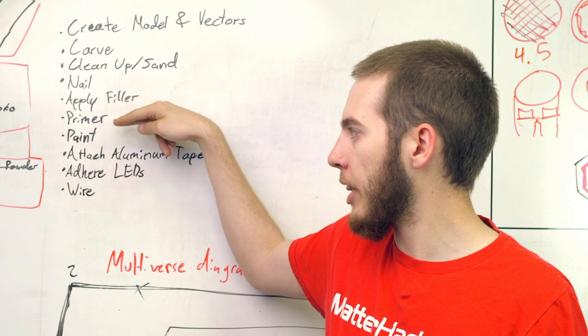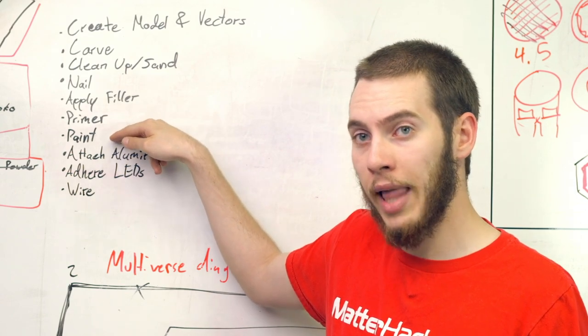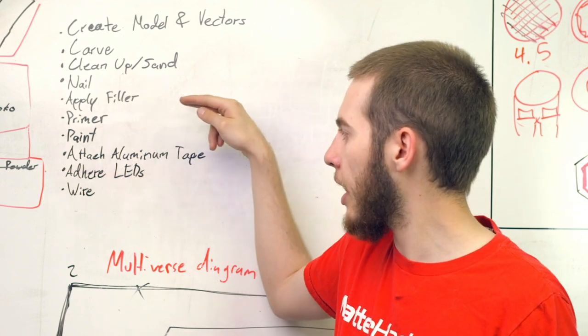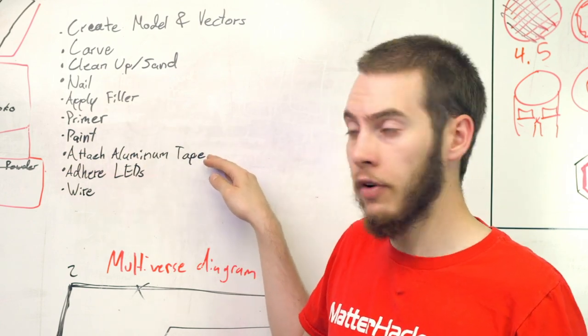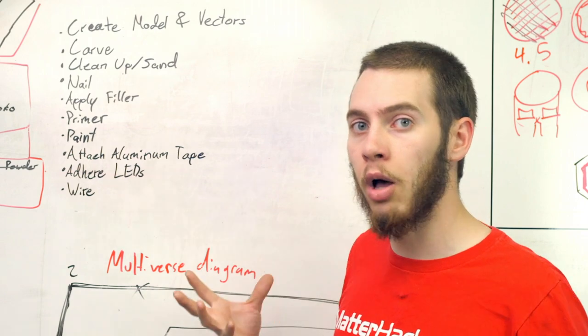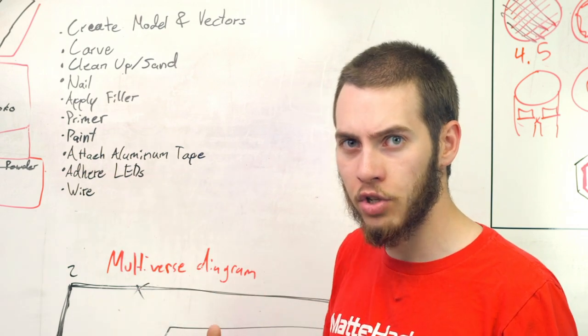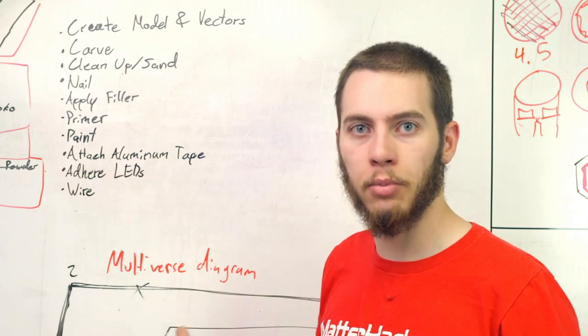With that applied, I'm going to primer it and then paint it. We're going to go with a black semi-gloss, and then once that's on, we can go ahead and actually do the majority of the finishing work, like attaching the aluminum tape to the inside to help reflect all the LEDs back so it doesn't just kind of get blocked by the inner material.